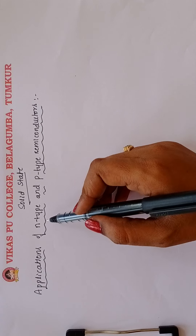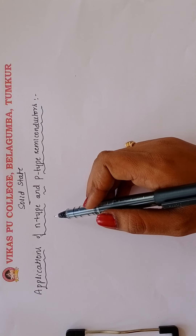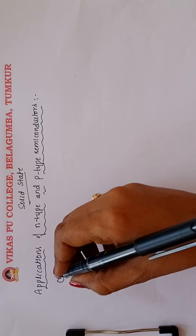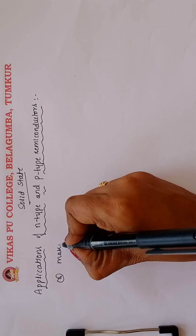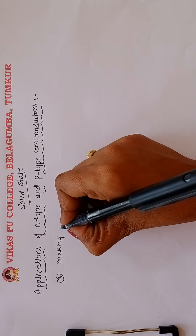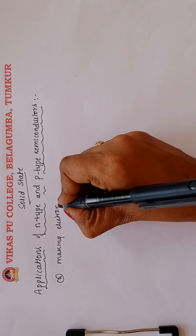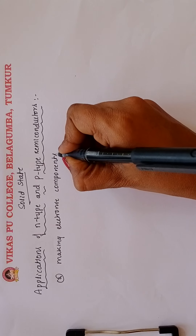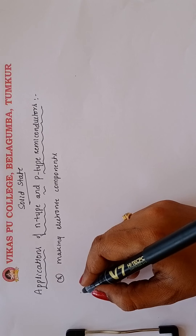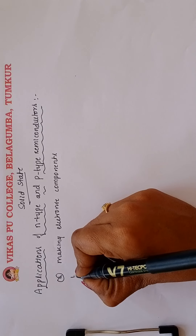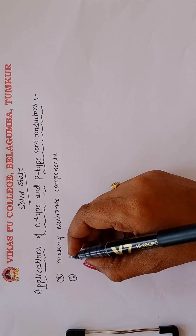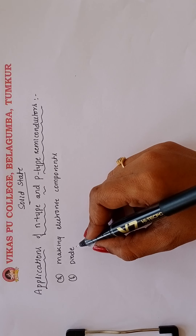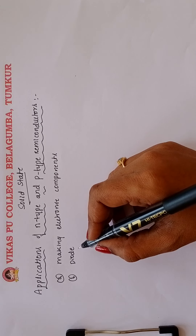When it comes to the applications of N-type and P-type semiconductors, the combination of N-type and P-type semiconductors are used for making electronic components. It is also used in the diode — a diode is a combination of N- and P-type semiconductors which is used as a rectifier.